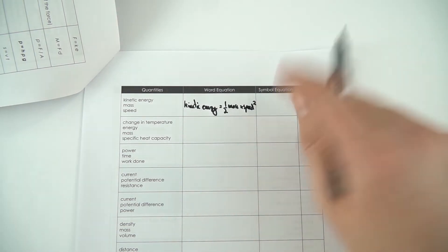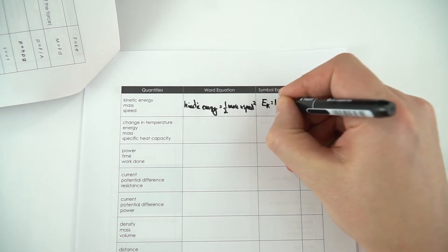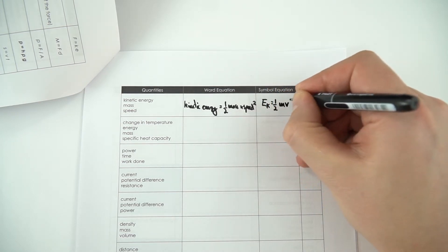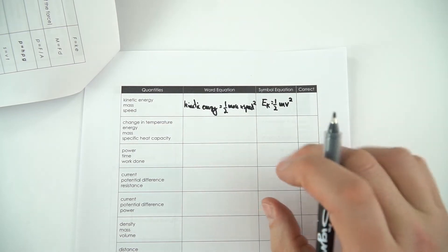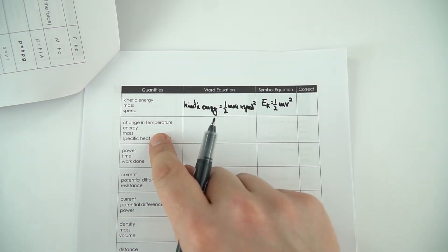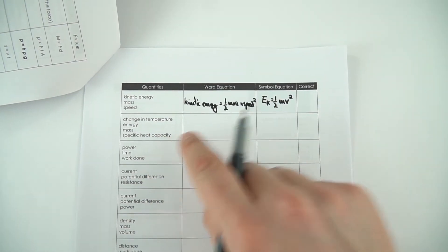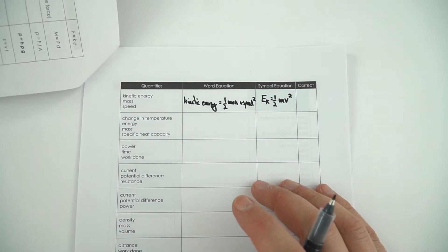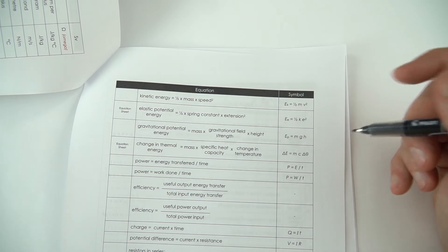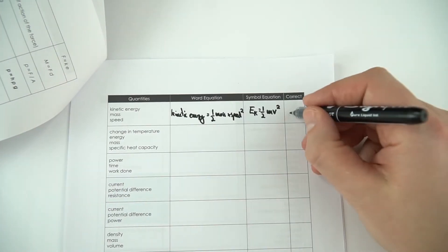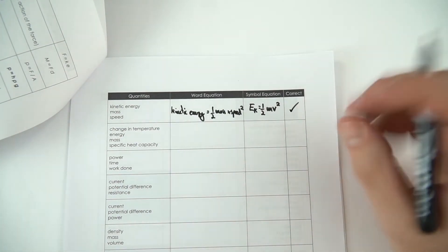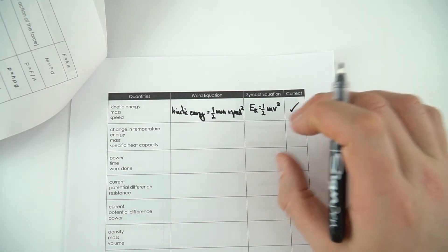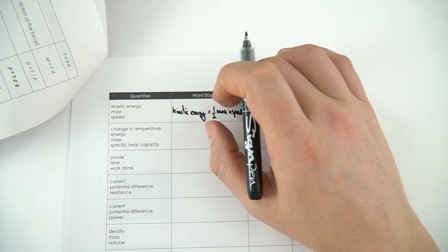What's the symbol equation? That's EK equals a half mv squared, and then you can fill in the whole table. You've got another one for this, and you just do the whole thing from memory. You can then go back, look in your list of equations, and check if you're correct. If you're correct, give yourself a massive tick, nice smiley face. If it's not correct, write in any corrections in another color.